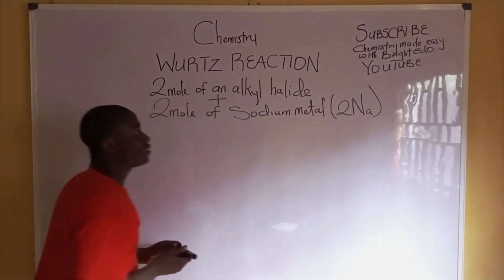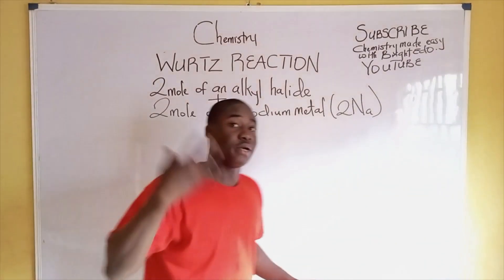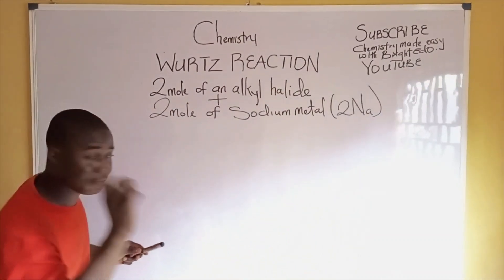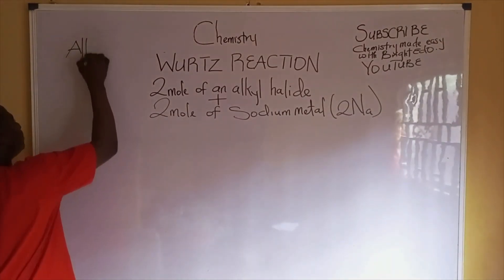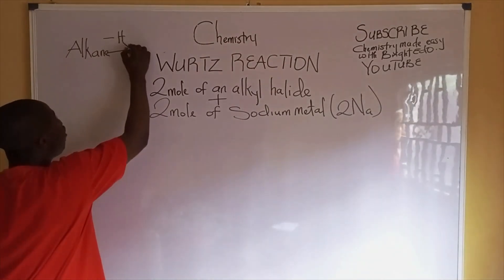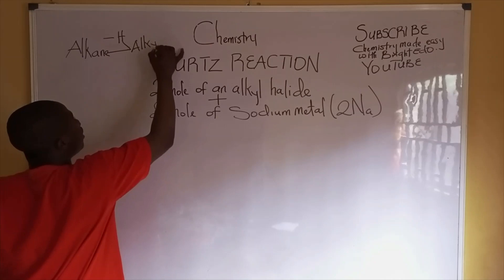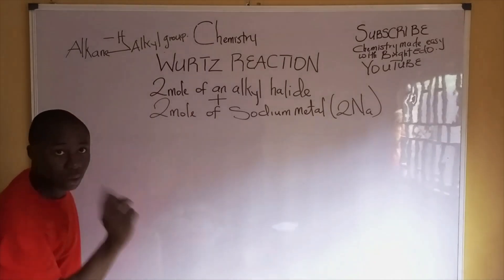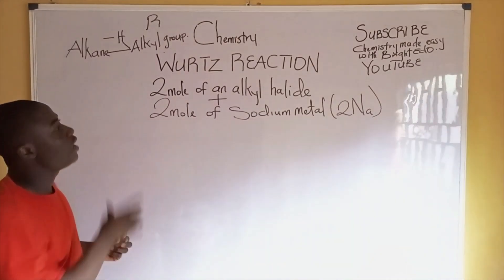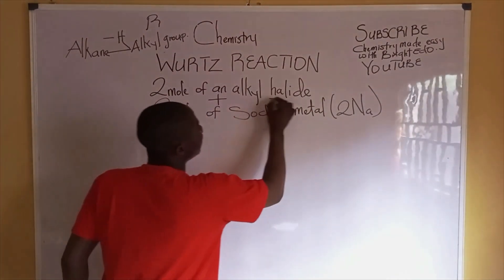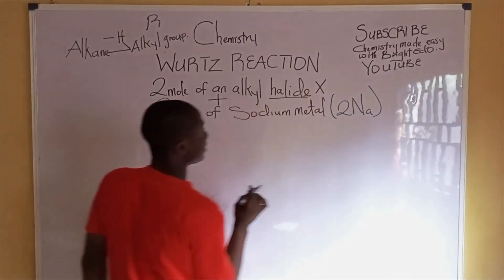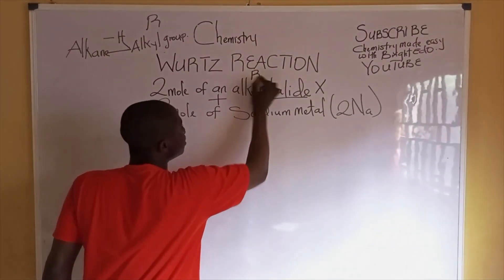What is an alkyl halide? Alkanes are a group of organic compounds, basically also called paraffins. Removal of one hydrogen atom from an alkane forms an alkyl group, represented with the symbol R. The halide refers to a halogen, represented with X.